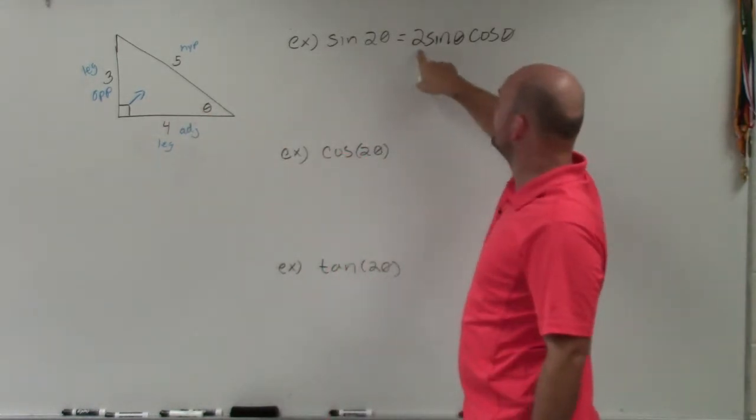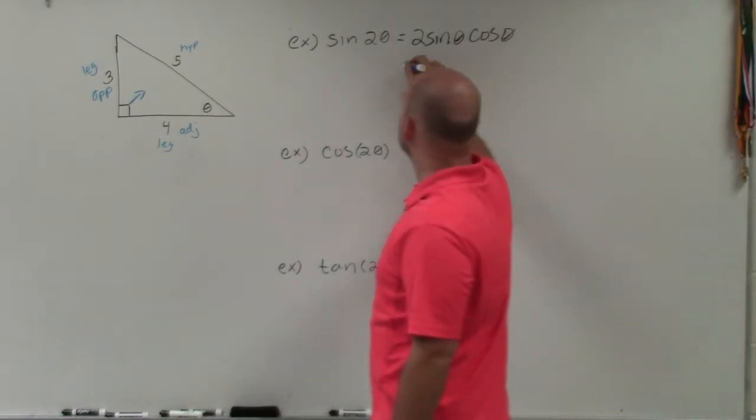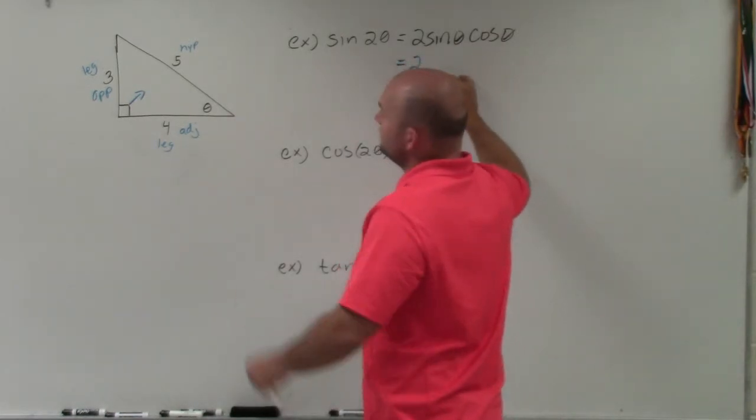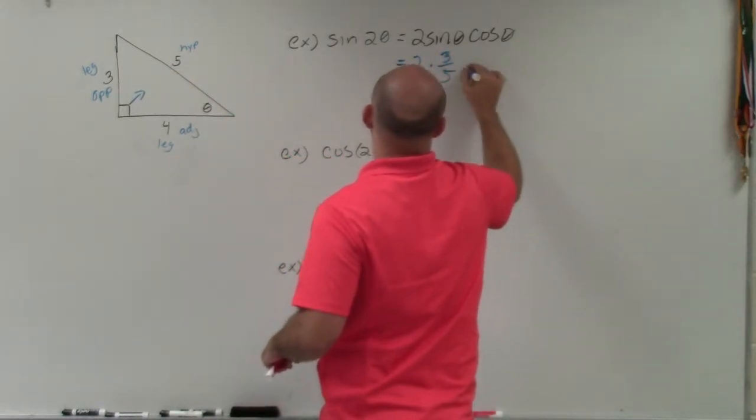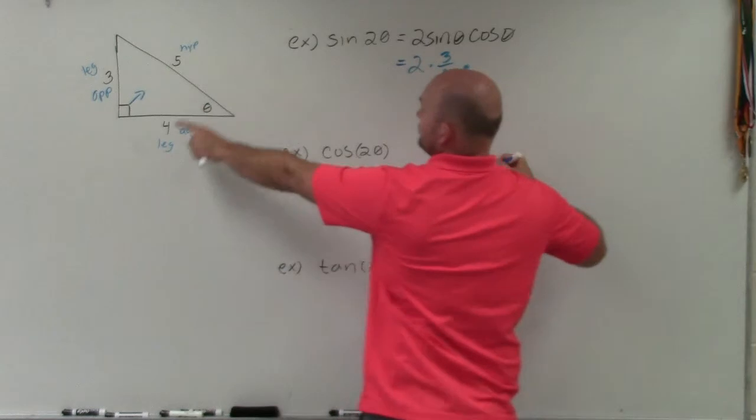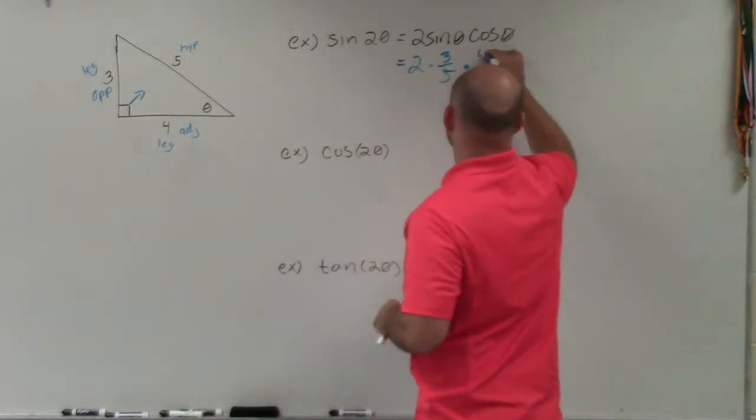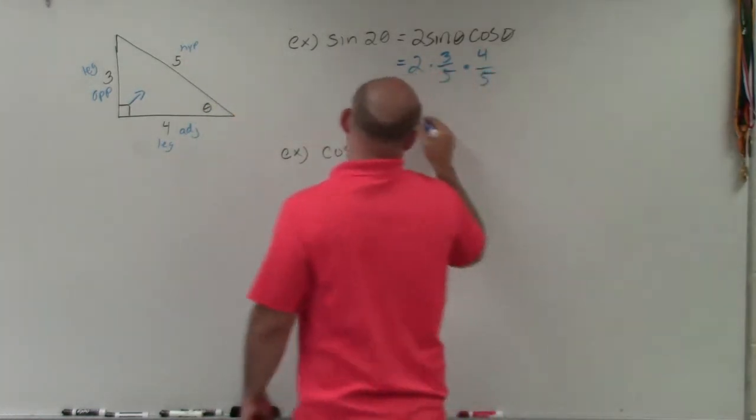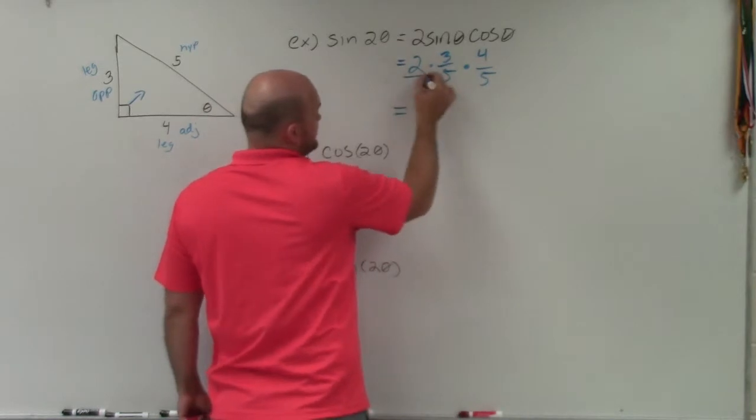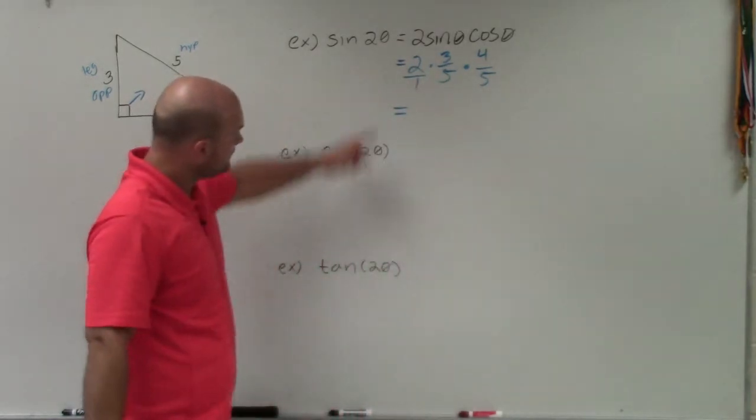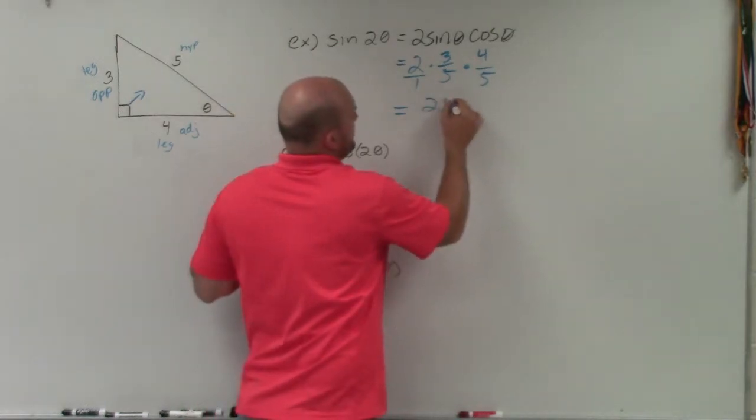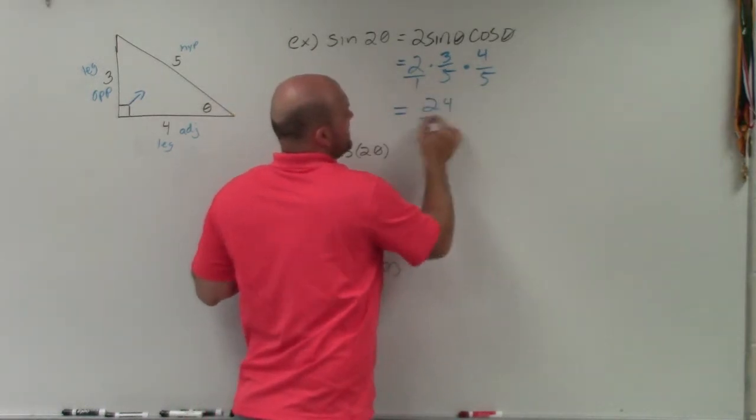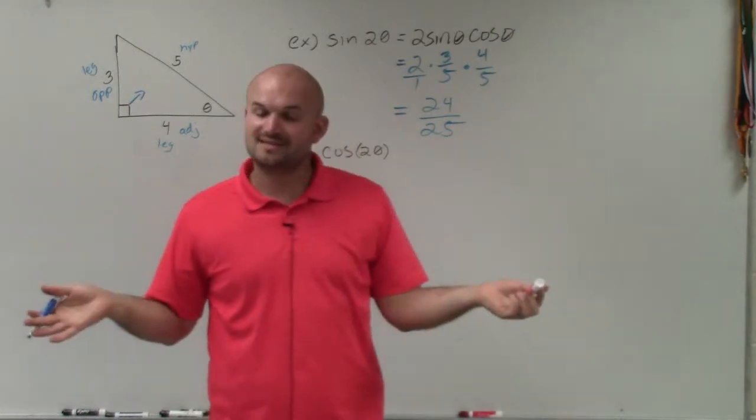So in this case, we have 2 sine of theta, therefore it's going to be 2 times sine, which is opposite over hypotenuse. So that's going to be times 3 over 5, times cosine, which is adjacent over hypotenuse. Then basically what we do is multiply. I can rewrite the 2 as 2 over 1. So that's going to be 2 times 3, which is 6, times 4, which is 24. And then 1 times 5 times 5 is 25. Done.